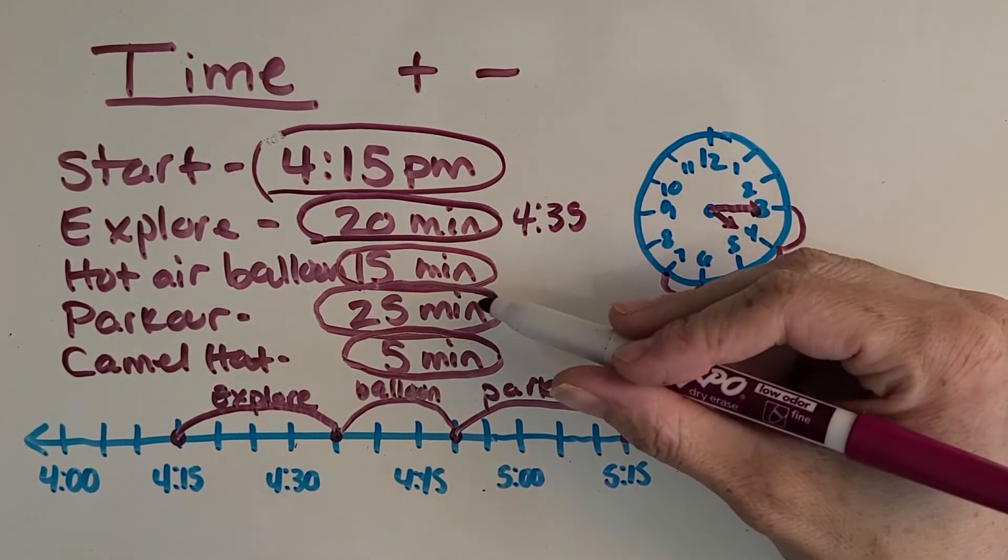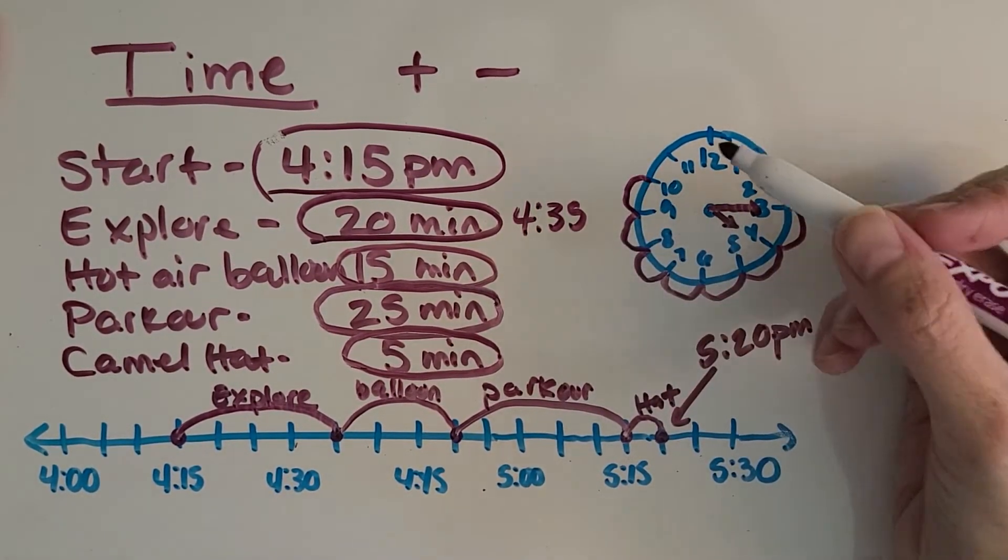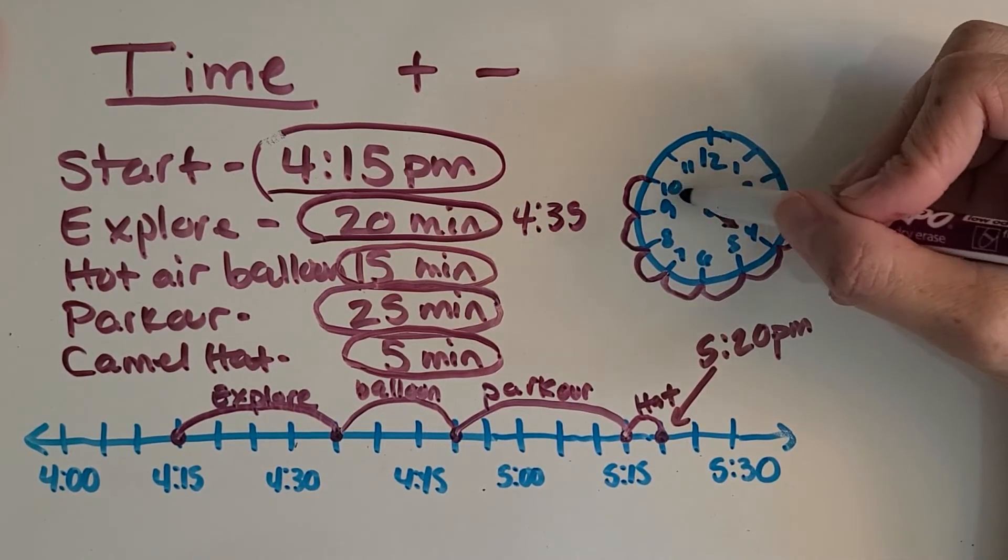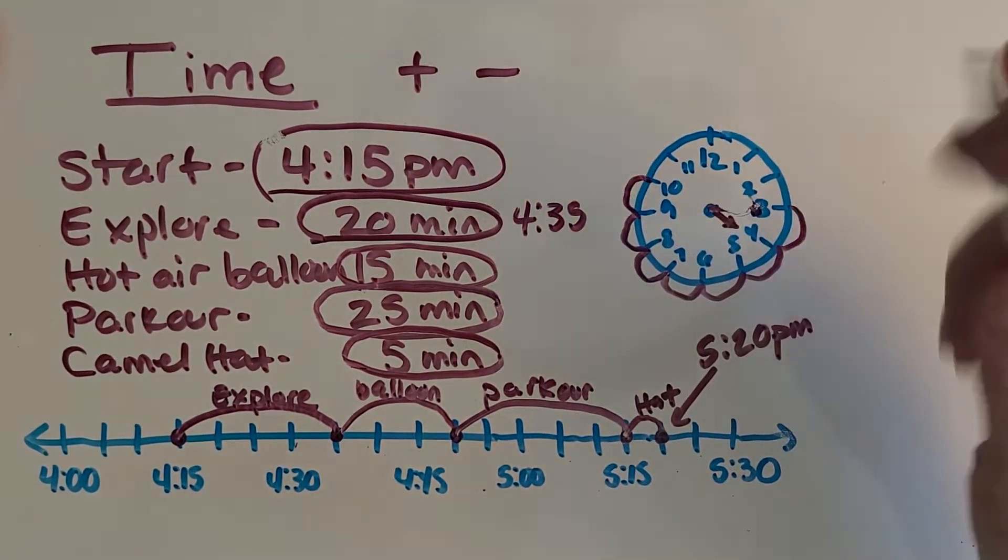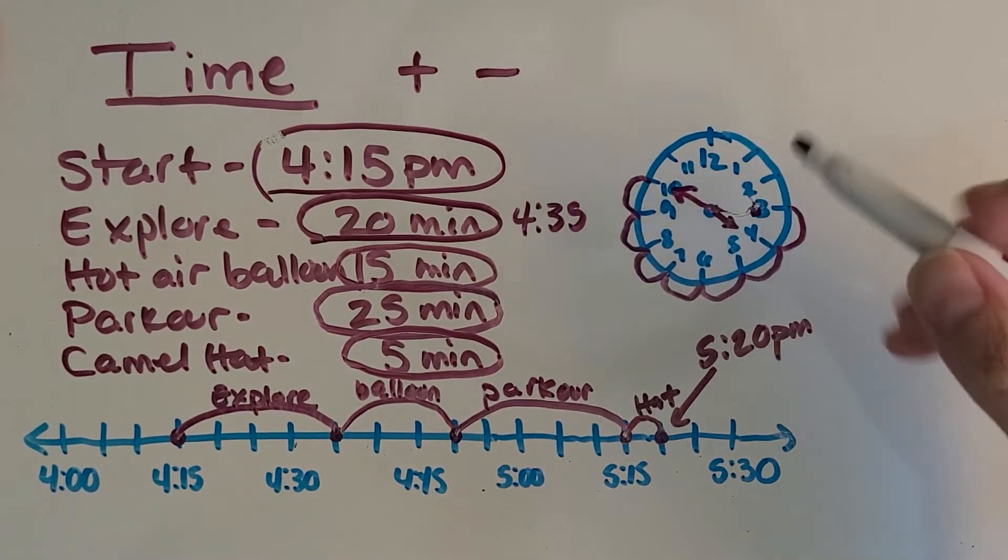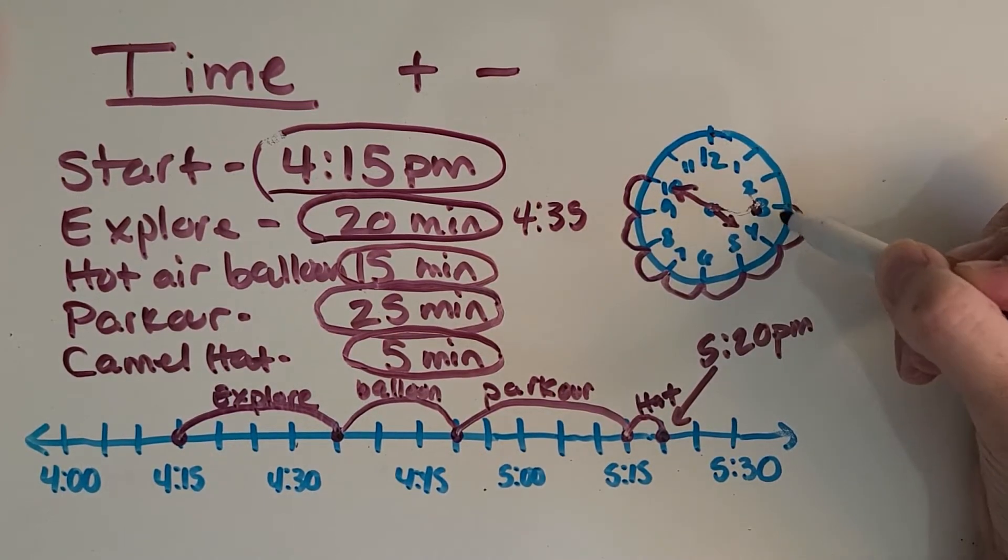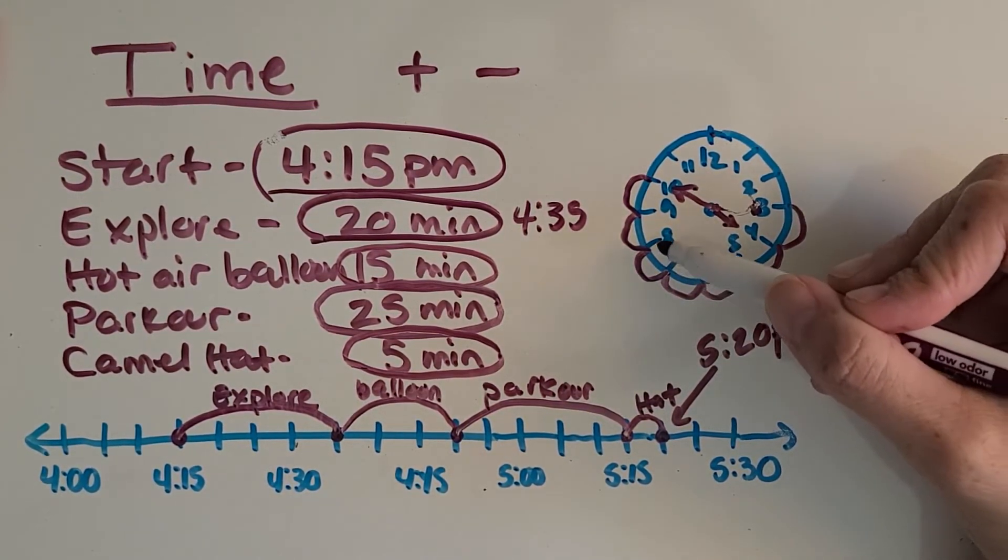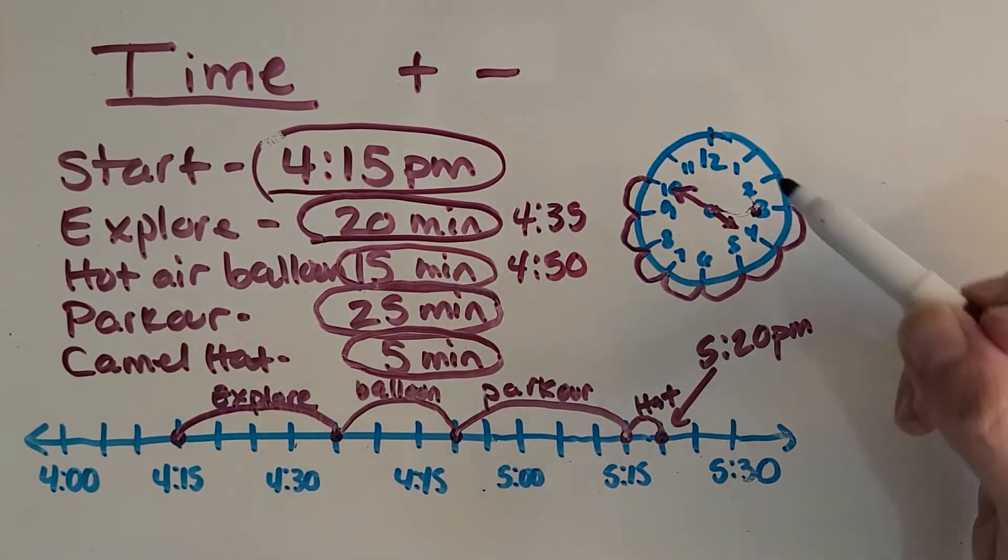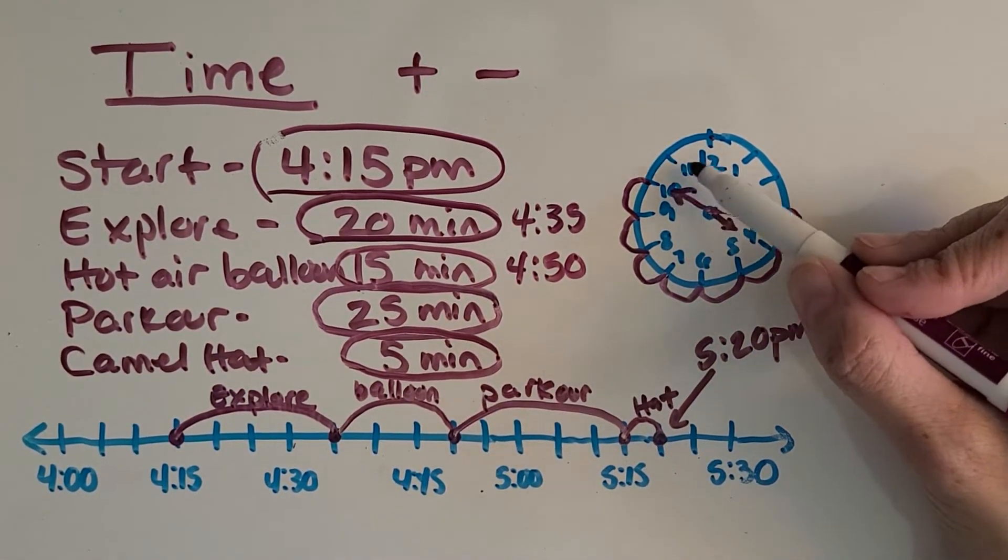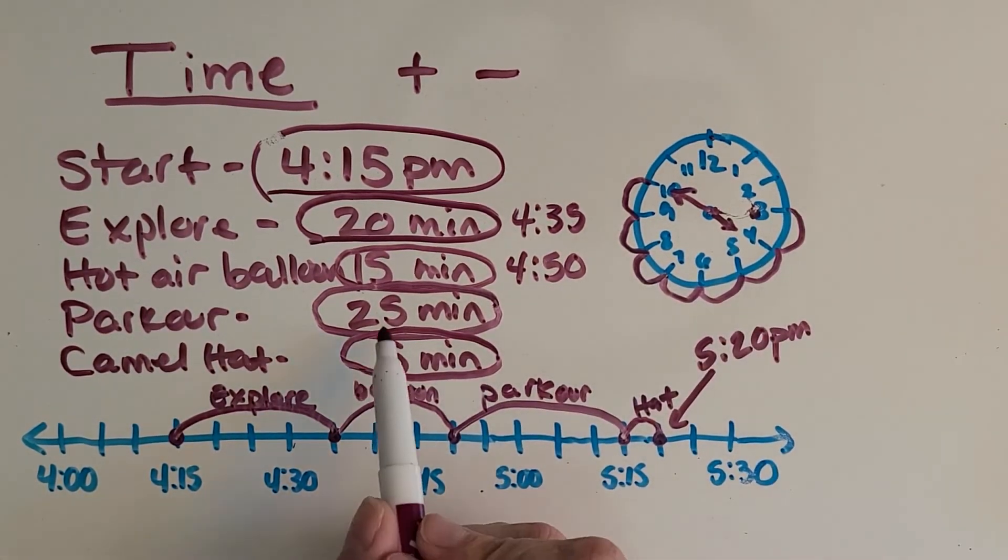All right, then 15 minutes for the hot air balloon. So 5, 10, 15. And then once again, if you're not sure what that time would be—I'll make my minute hand going towards the 10—you can always just start again right here and count. 5, 10, 15, 20, 25, 30, 35, 40, 45, 50. So it's not 5 o'clock yet because we have to get up to that 12 to make it 5 o'clock.